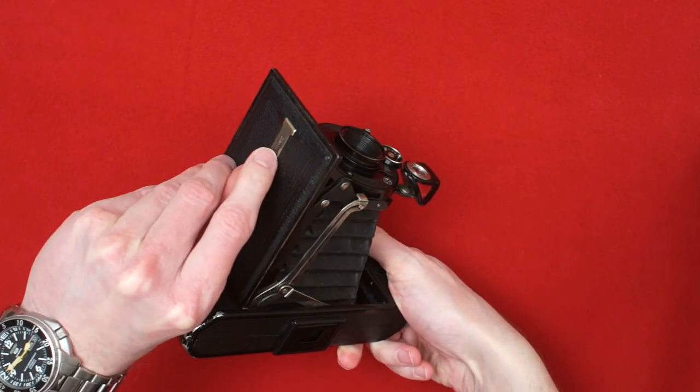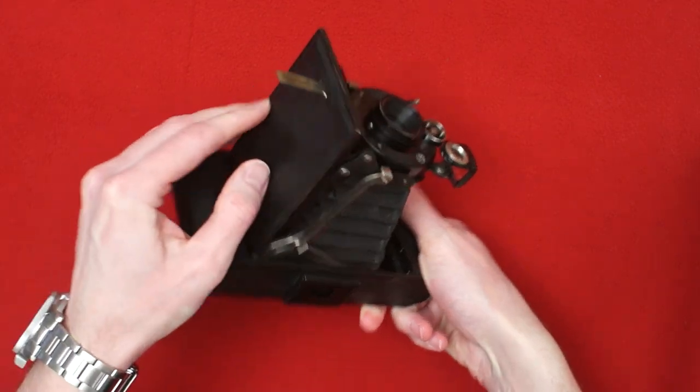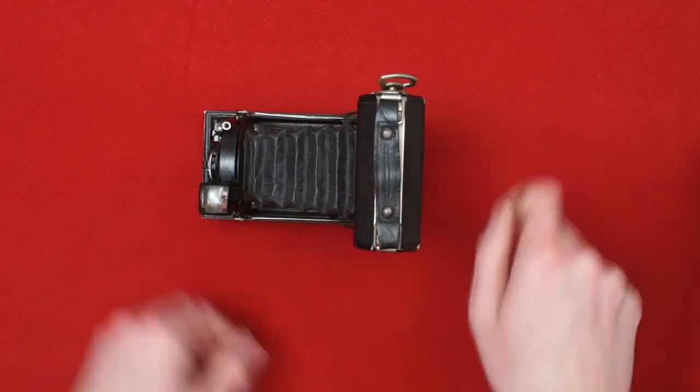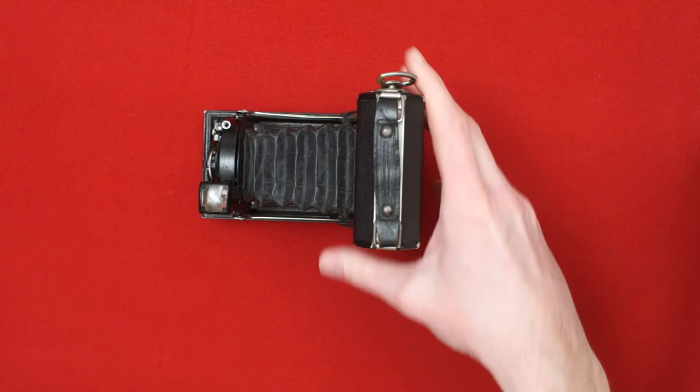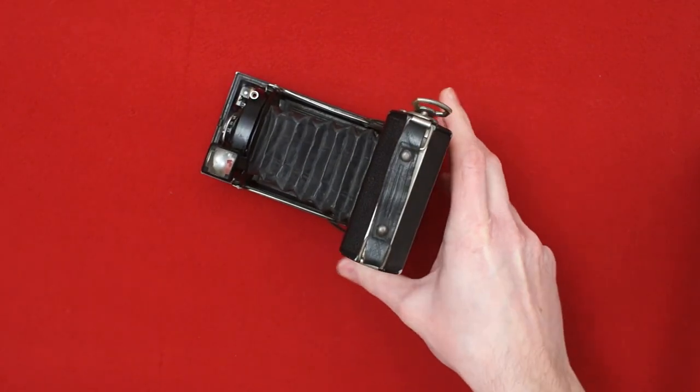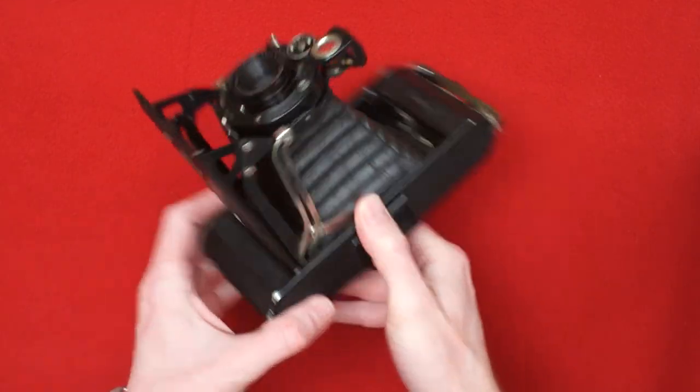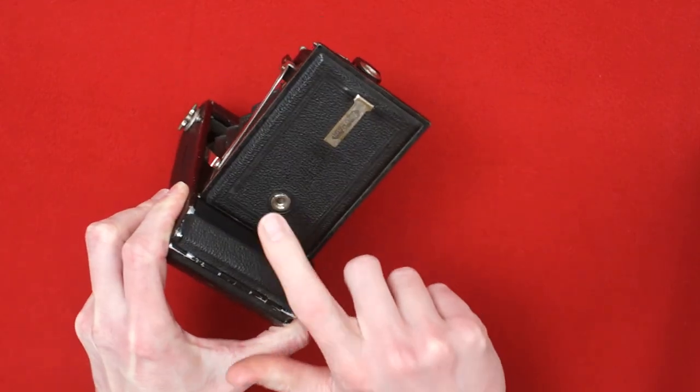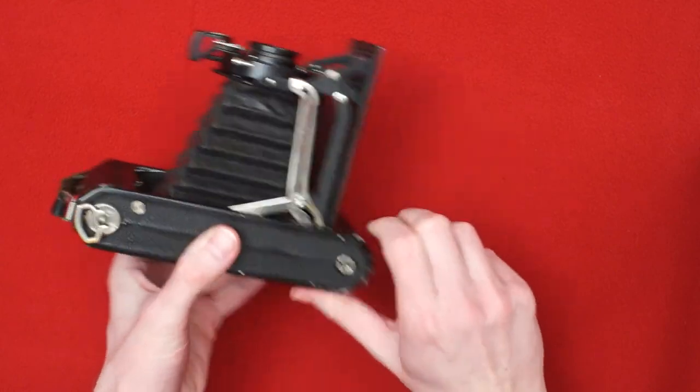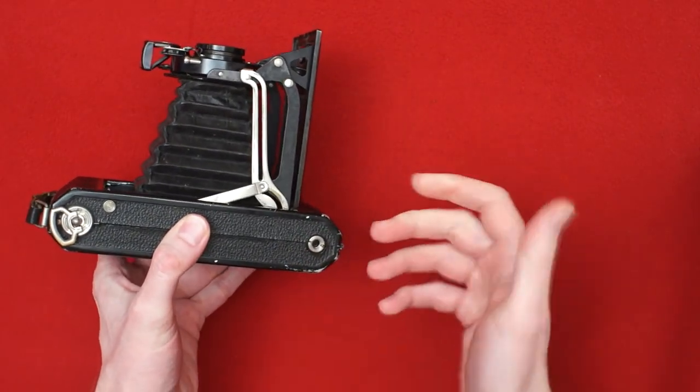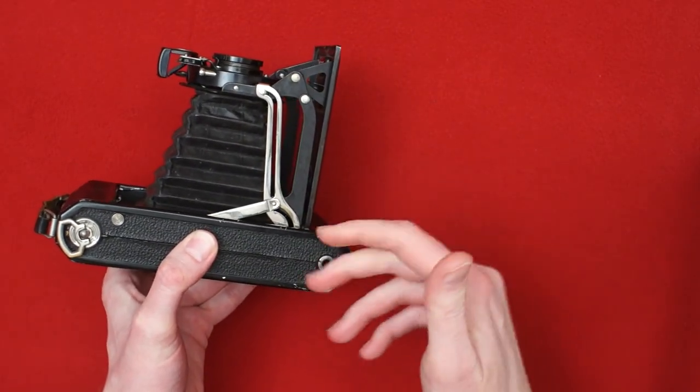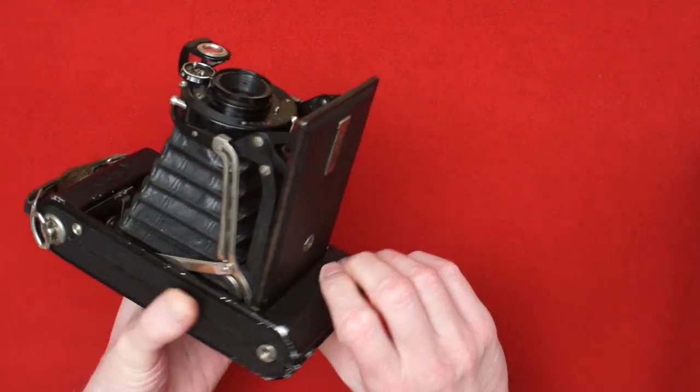There is a little kickstand. You can put the camera on some flat surface, use it as a tripod, kind of. It has actually two tripod sockets. One here, one here. And the thread in it is the modern one. You can just use a modern tripod foot.